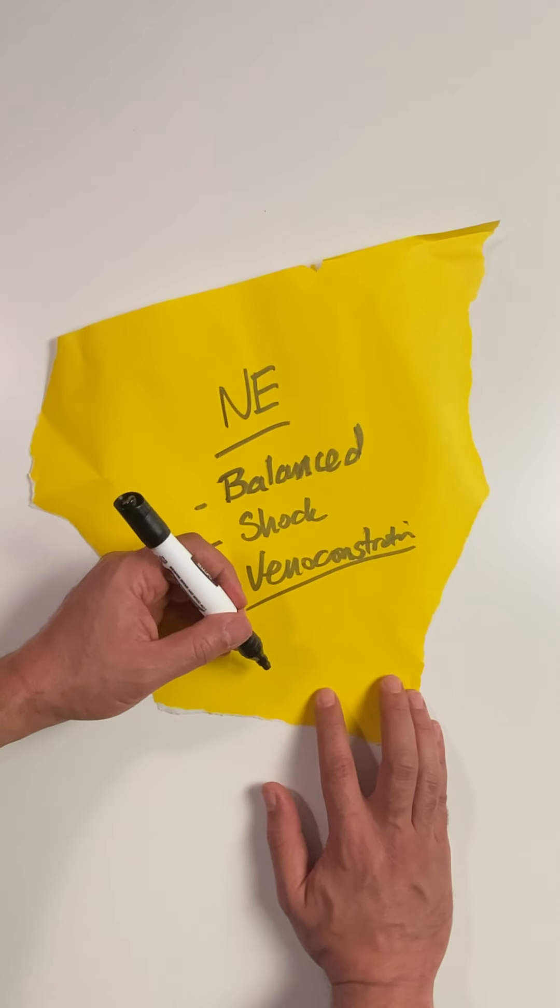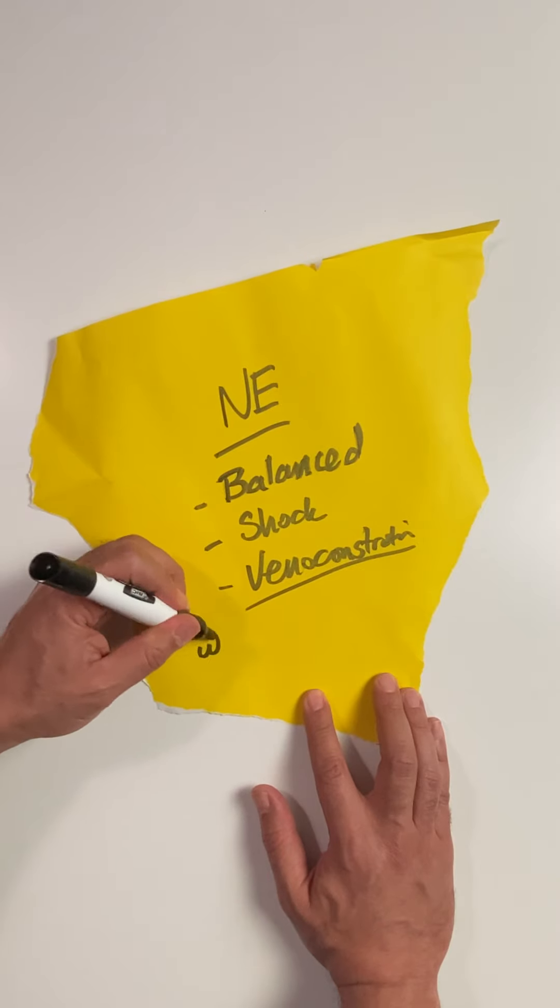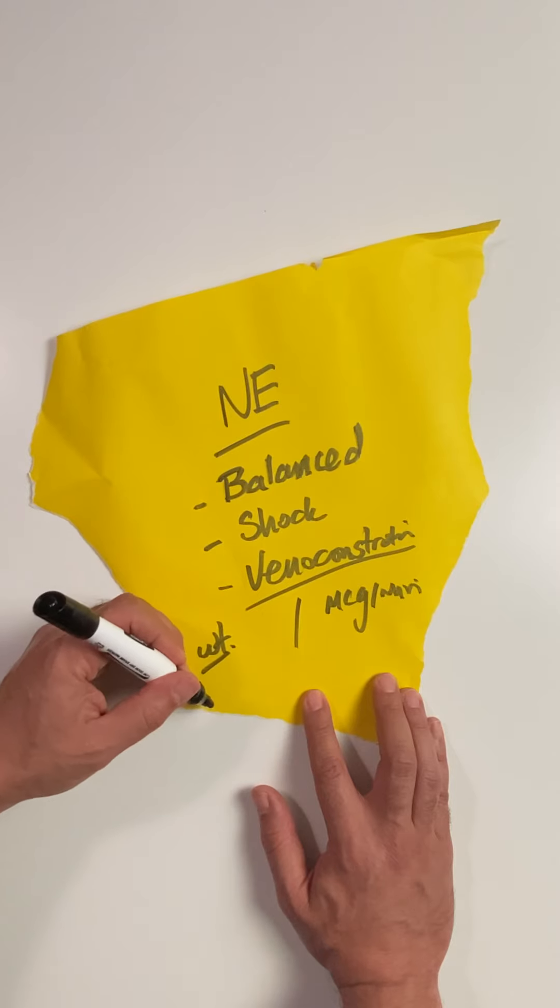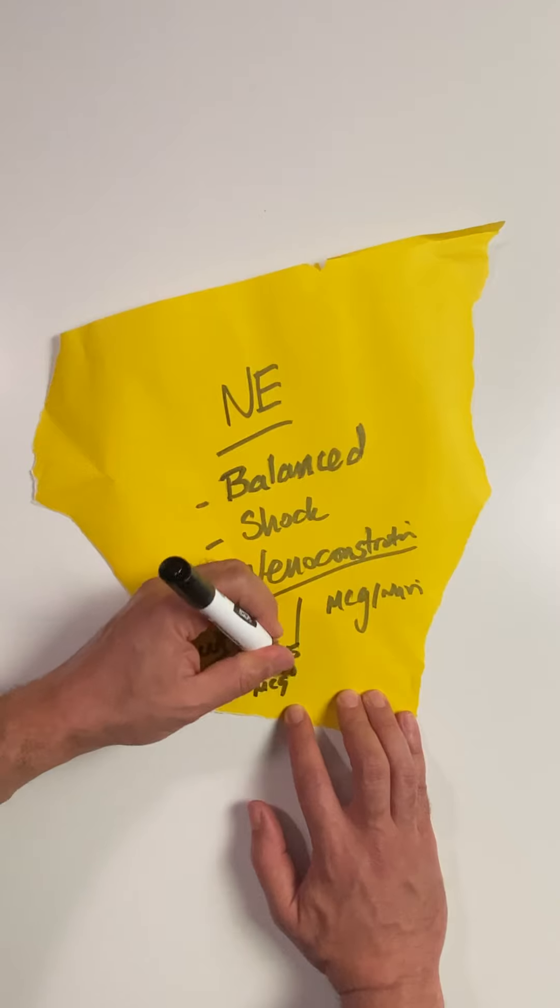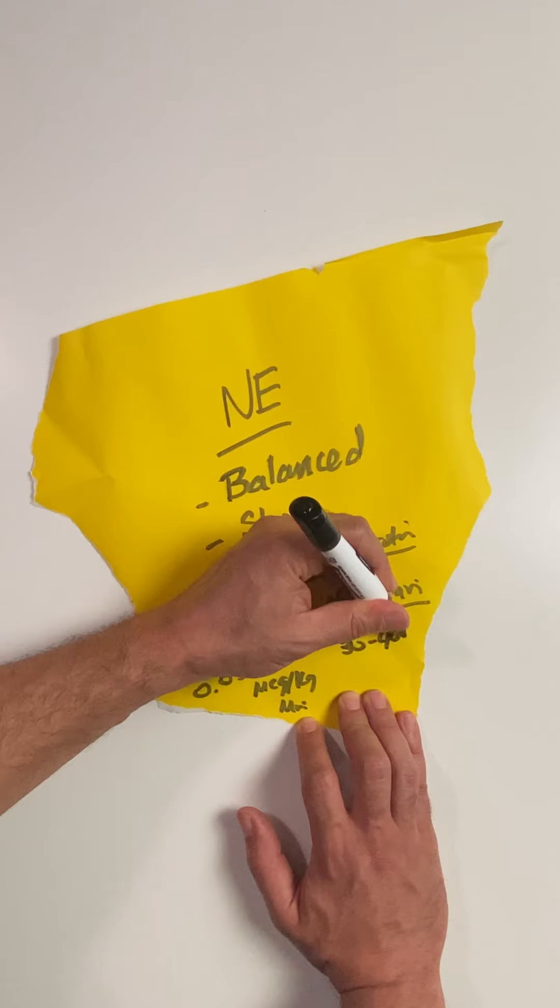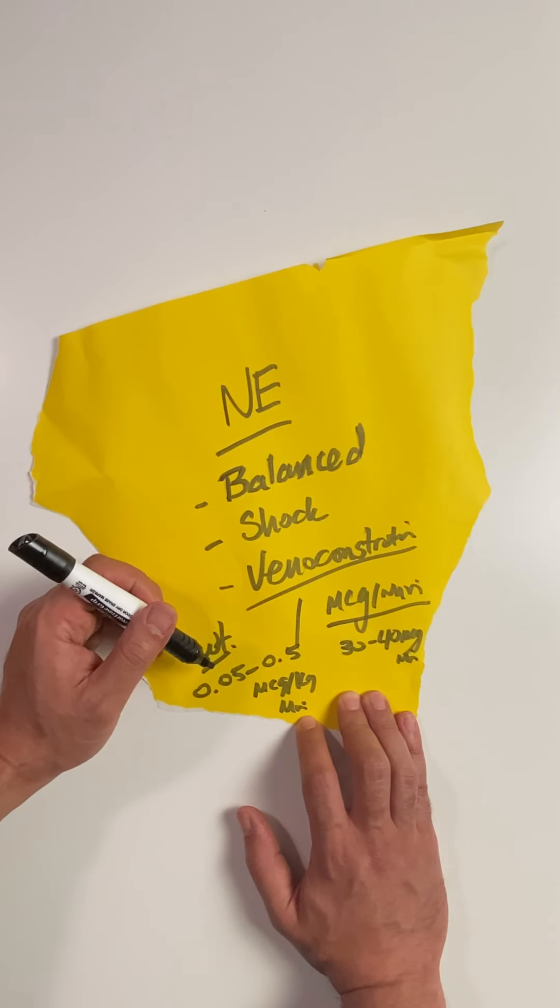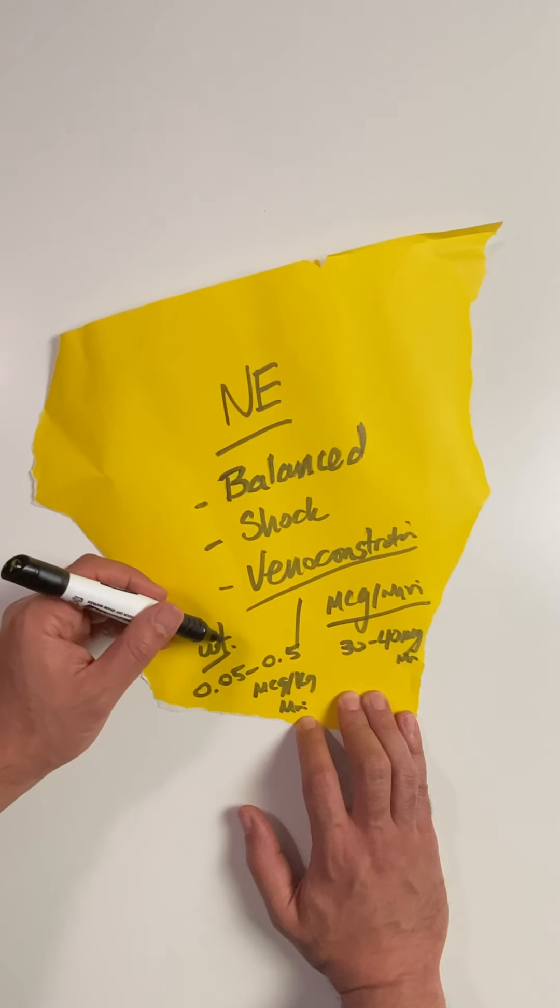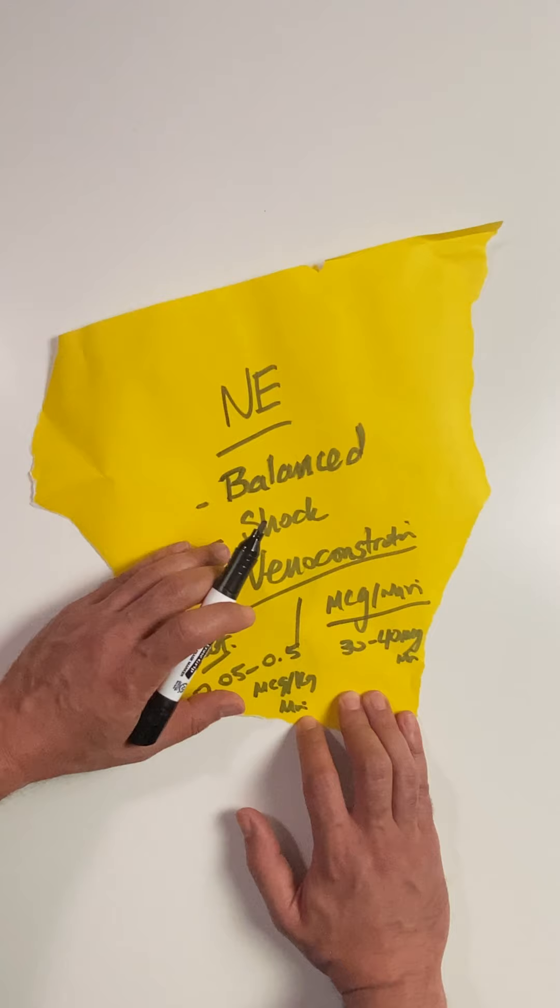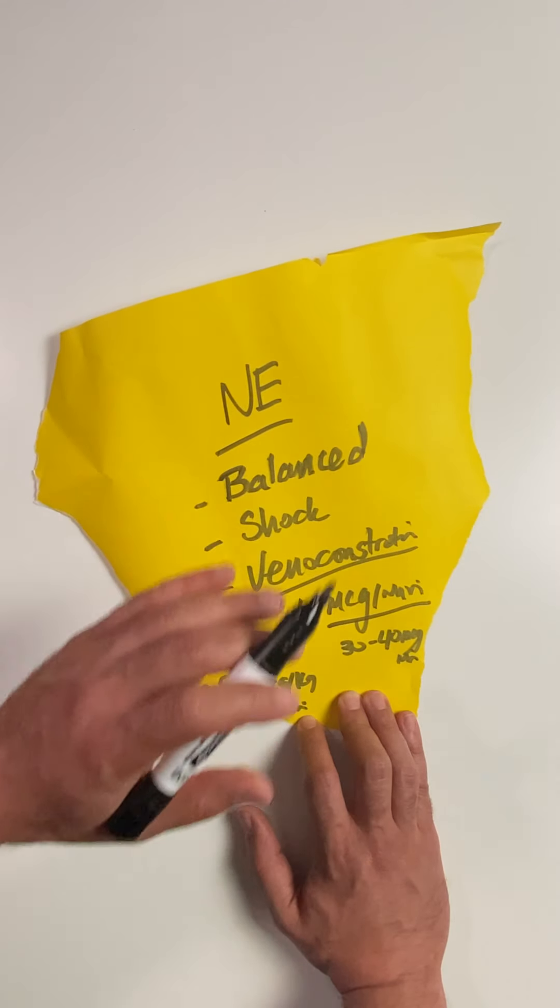The very last thing is the dosing of norepinephrine. There are two general classes: weight-based dosing and standard microgram-per-minute dosing. It depends on your institution, but when using weight-based dosing, it's 0.05 to 0.5 micrograms per kilogram per minute. For standard dosing, you can go up to 30 to 40 micrograms per minute. Technically there's no max dosing, but realize once you go over these doses, you're causing vaso- and venoconstriction that could compromise blood flow to critical organs like the kidneys, heart, and brain. So just keep that in mind.